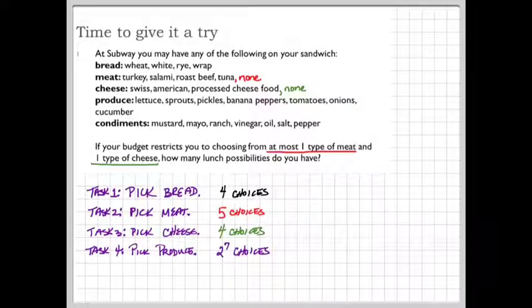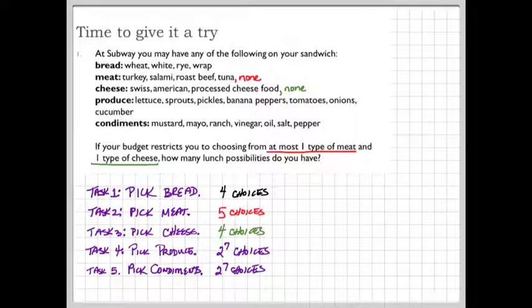Similarly, when you pick condiments for task five, there are seven condiment choices: mustard, mayo, ranch, vinegar, oil, salt, and pepper. So there will be two to the seventh choices for how you can put condiments on the sandwich.